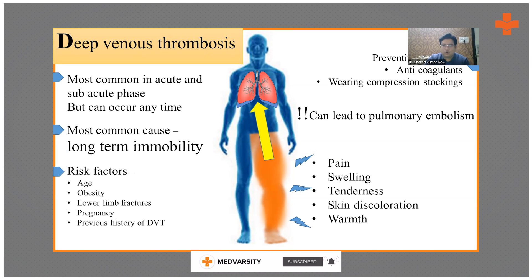Preventive measures are usually anticoagulants like low molecular weight heparin and wearing compression stockings. If the PT/INR is normal, initially start with compression stockings and ankle pumps. If the patient has high risk factors, then start anticoagulants. The next important complication is orthostatic hypotension.